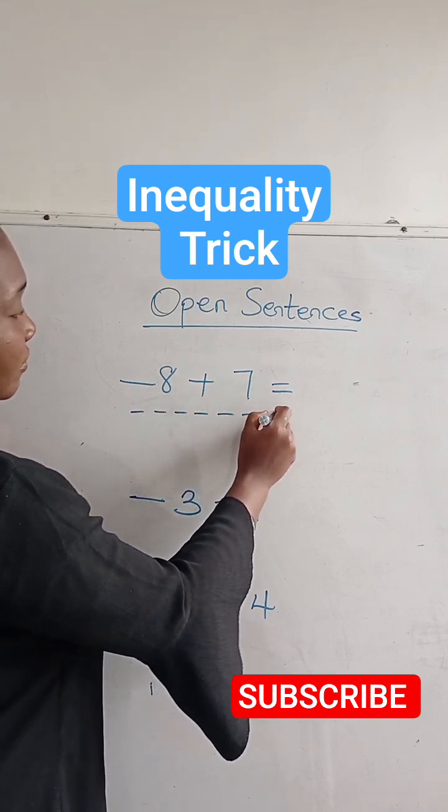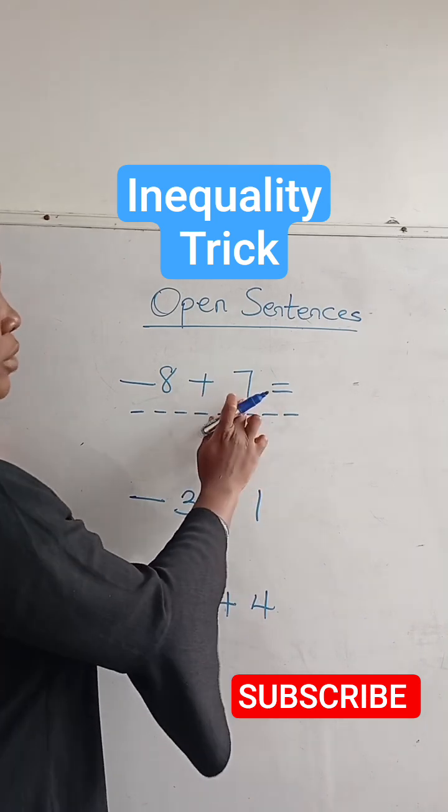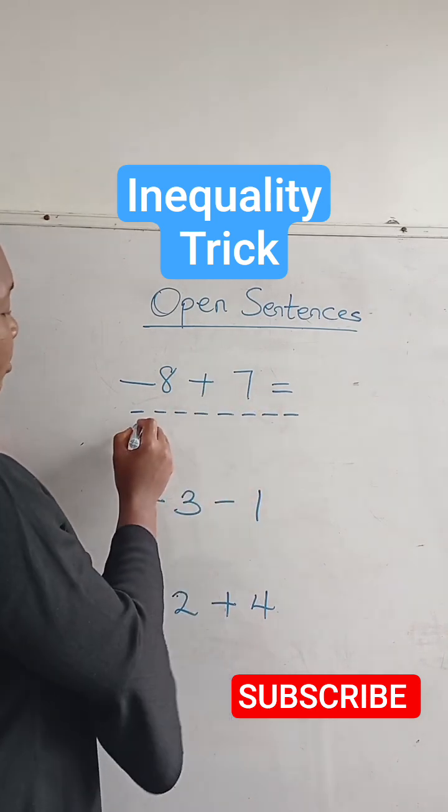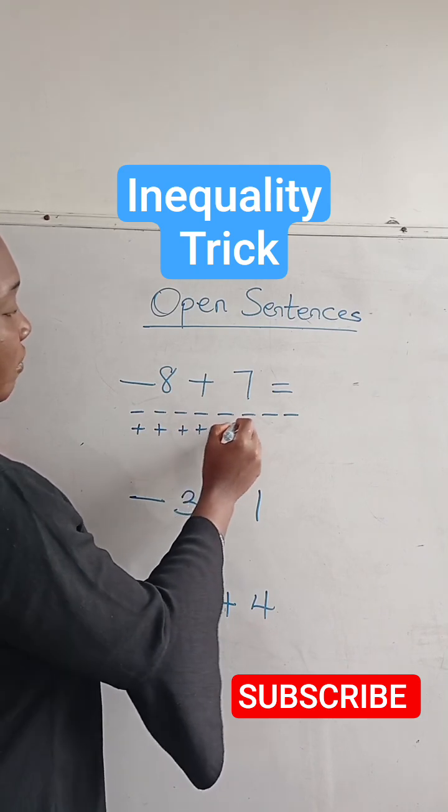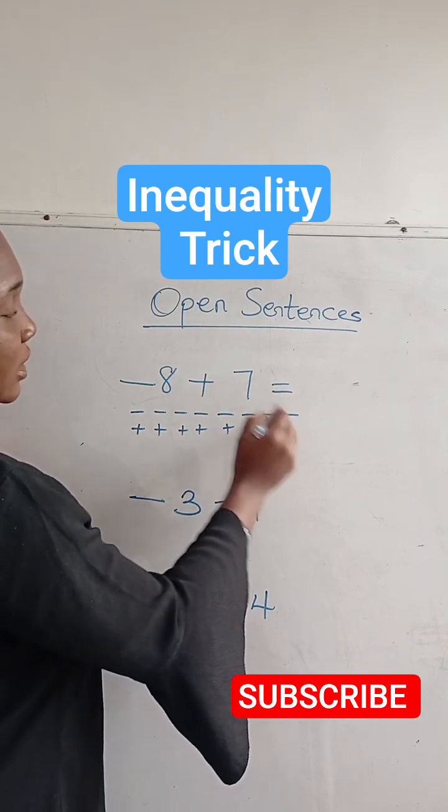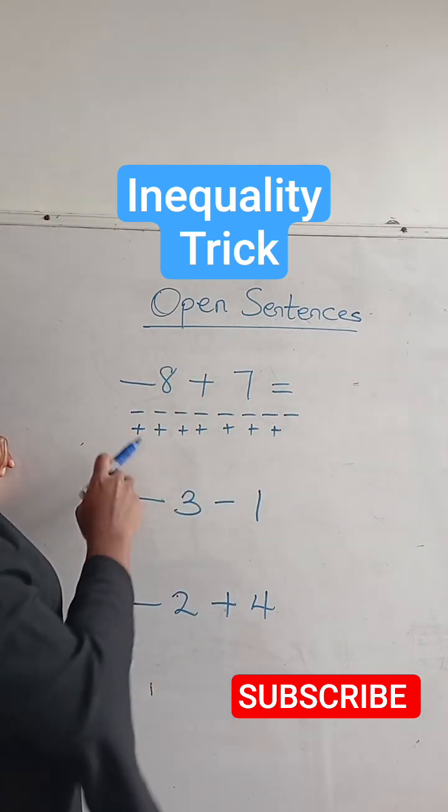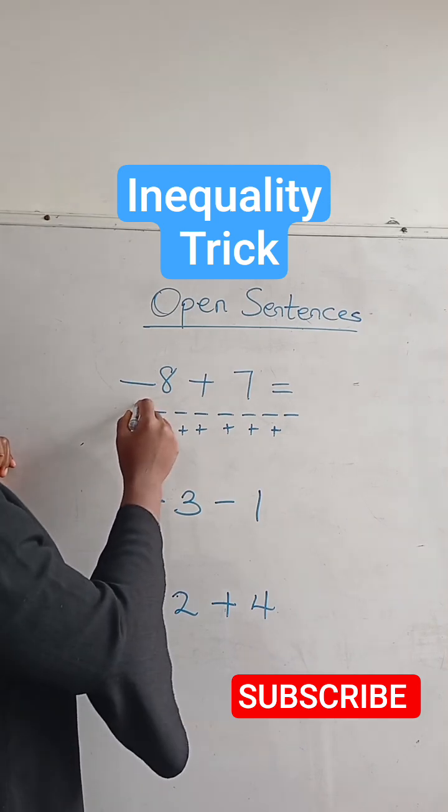And here we have plus seven, so I'm going to count plus one, two, three, four, five, six, and seven. So what I'm going to do is I'm going to pair them.